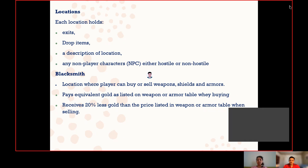There are two blacksmiths. A blacksmith is a location where the player can actually buy or sell the weapons they want. Whenever the player is buying, they need to pay gold, which is referenced from the weapon and armory tables. When selling items, they receive 20 percent less gold than the actual price.